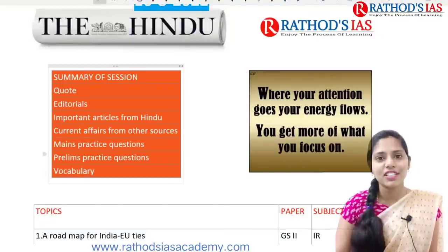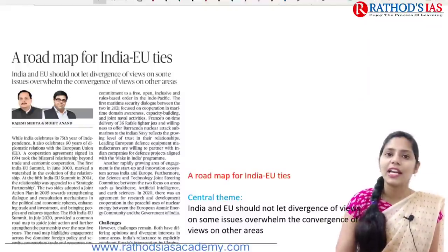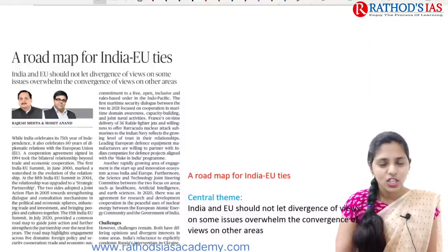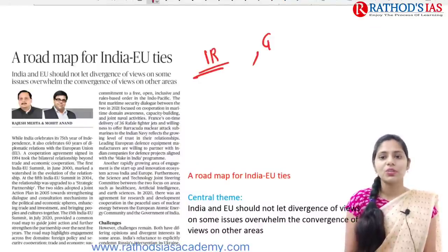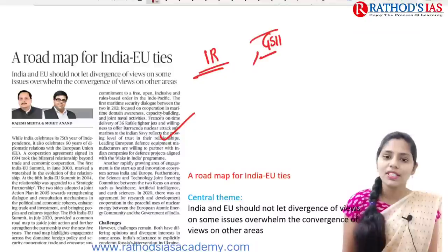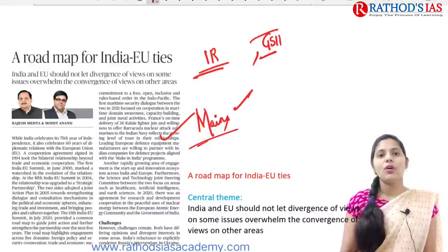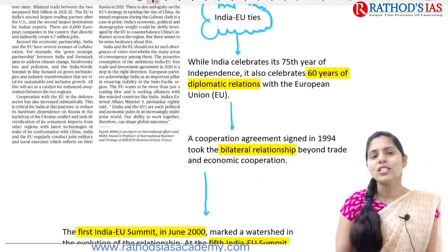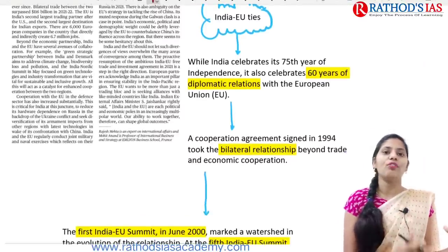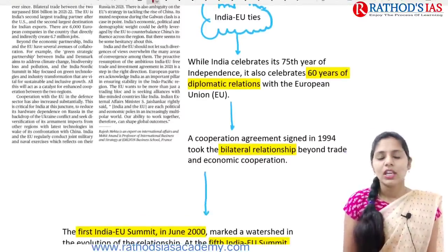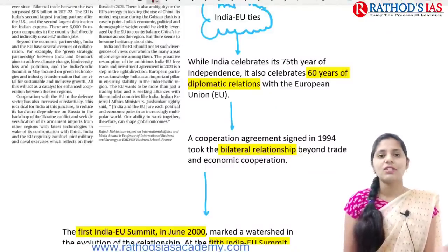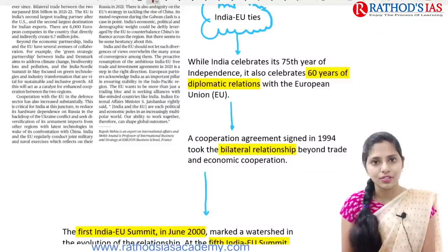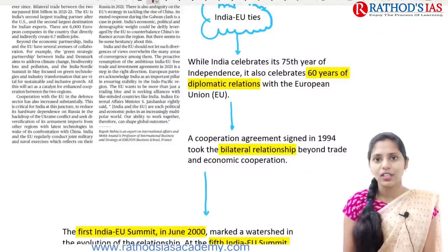Now let us look at the first topic, which is regarding India and European Union ties. This article is important from international relations, which comes under your GS Paper 2. This topic is exclusively important from your mains, not your prelims. We are going to talk about the background of India-EU ties, some important areas of cooperation between India and the European Union, and also the challenges between India and EU ties.